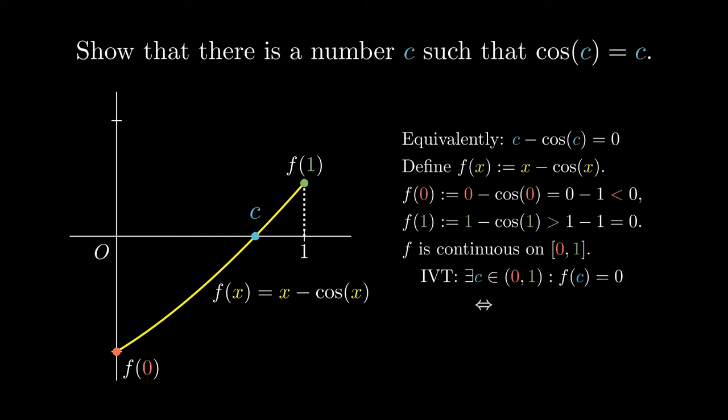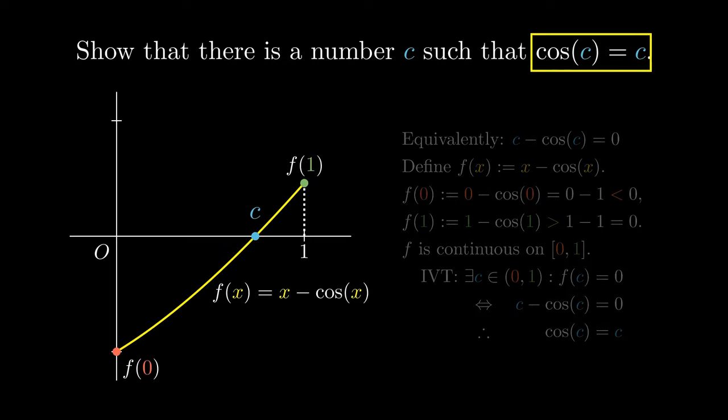But unpacking the meaning of f(c), we get that c minus the cosine of c equals 0. And by some algebra, this means that the cosine of c really does equal c.